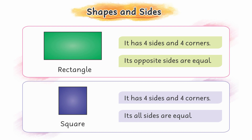We have to recall the characteristics of these shapes. You can see a rectangle here. A rectangle has corners — also called vertices. These corners are four corners, and it has four sides.